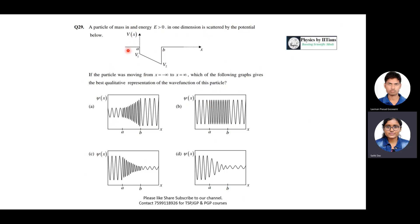The particle moves from left to right. There are two boundaries — at a and at b. At the first boundary, some of the wave will be transmitted and some reflected; similarly at the second boundary. The incident wave has the maximum amplitude. Looking at option one, the amplitude is very small initially and then grows larger — this cannot be correct, so we cancel option one.